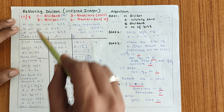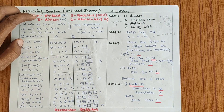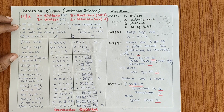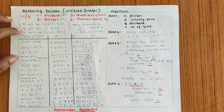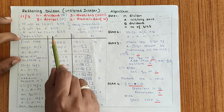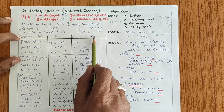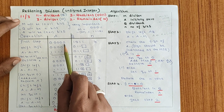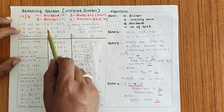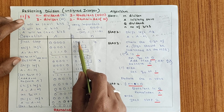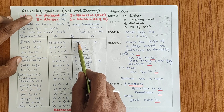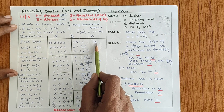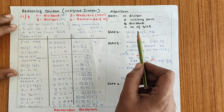Let us get into the problem. Q is 11 and M is 3. M will be represented as 5 bits and Q is represented as 4 bits. The operation uses registers A, Q, and count N. A is N+1 bits, so all 5 bits are initially loaded with 0. Q is N bits, so Q = 1011. The N value is initialized to 4.